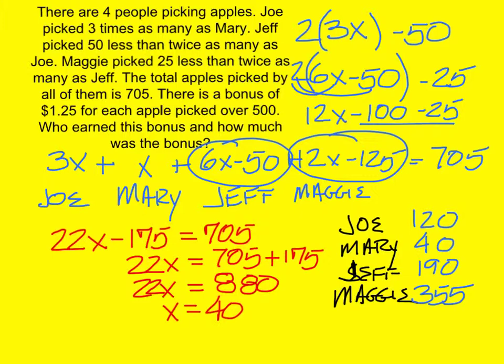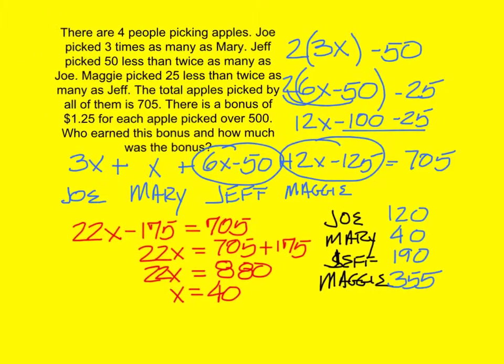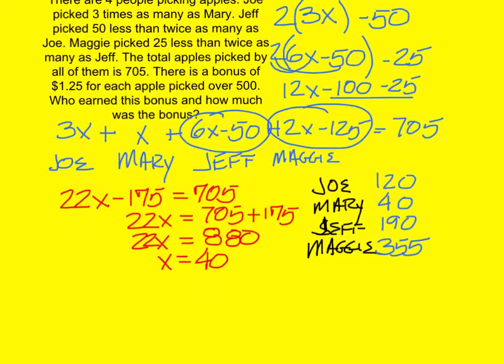Did anybody have 120, 40, 190, and 355 all the way down? Okay. Well, the problem isn't over yet. We have to figure out the bonus. There is a bonus of $1.25 for each apple picked over 500. Who earned this bonus and how much? Did anybody earn it? Nope. So the whole answer to the problem is no one or something similar.